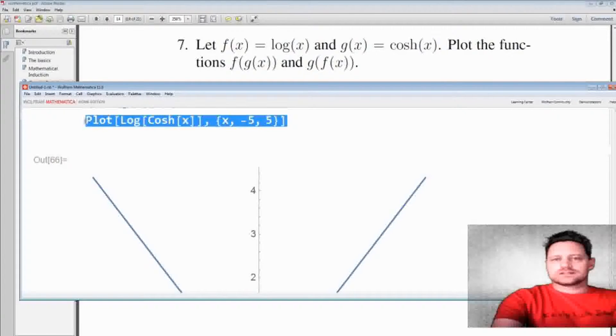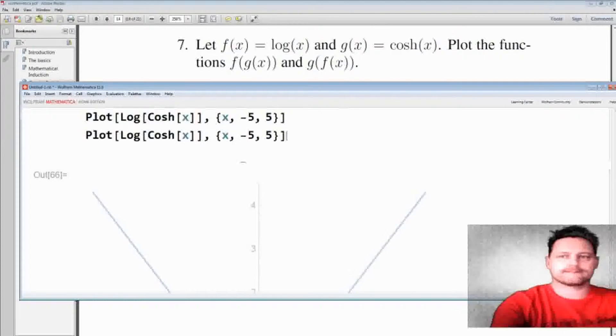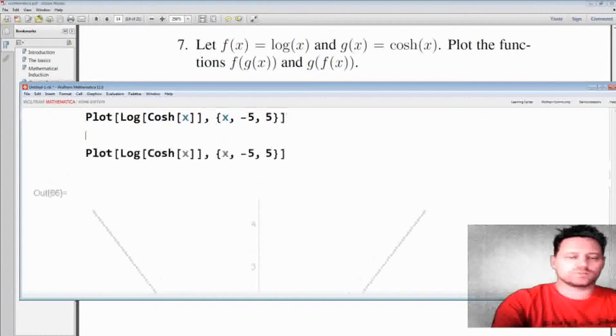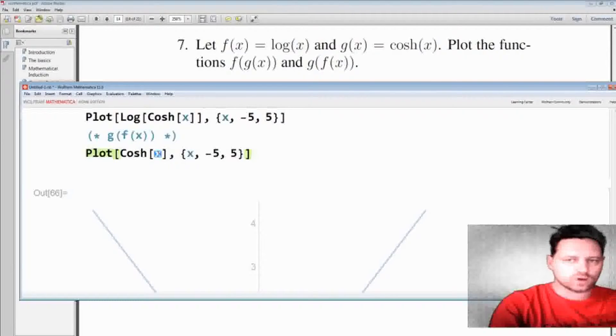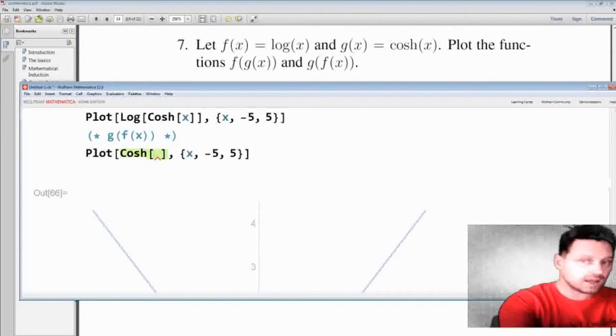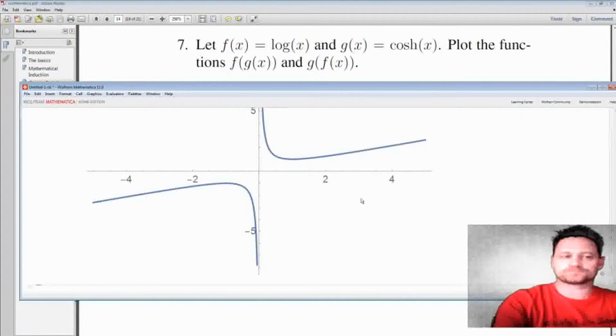Now let's do this the other way around. The next one will be g of f of x. So g is just cosh and then where I have x I replace this with f of x, but f of x is just log of x. Shift enter and see what we get. That is this one down here. So that's that one done.